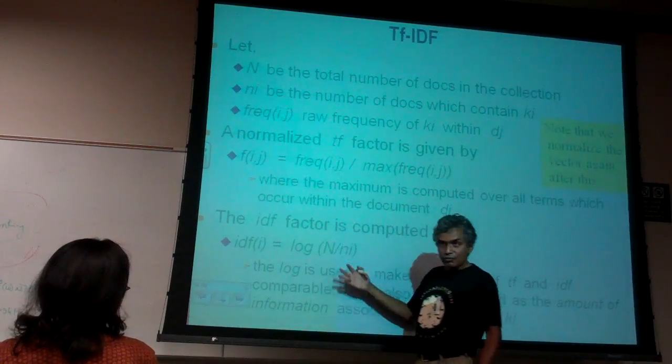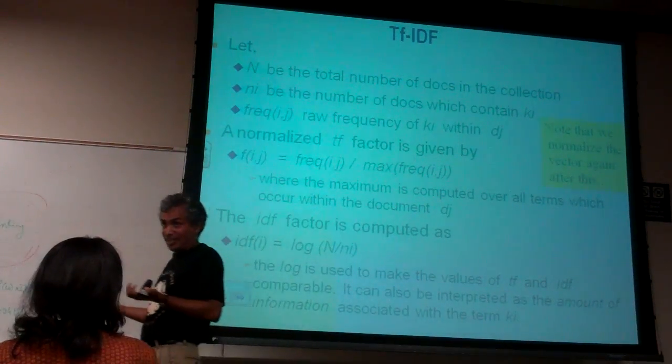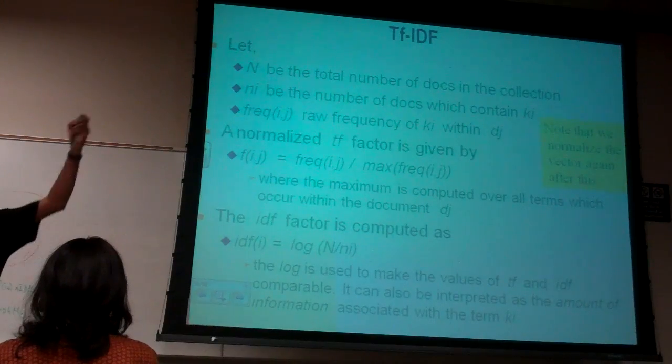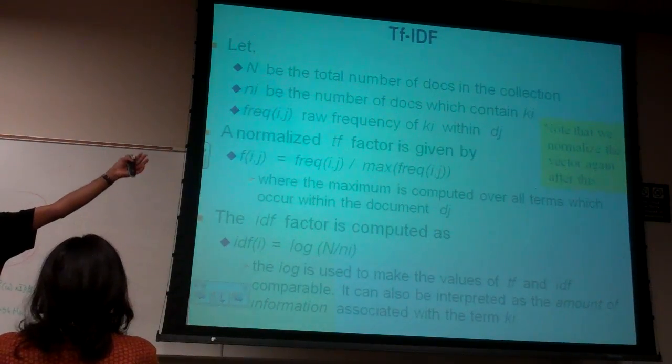IDF is the log of number of documents divided by the number of documents that have this word. And you take log for two good reasons. At least, log of one is zero. The other is IDF otherwise can be much larger than TF.